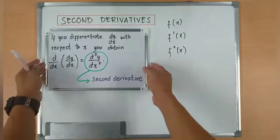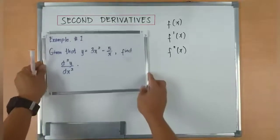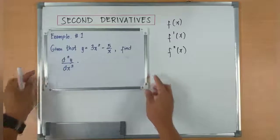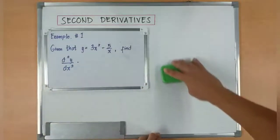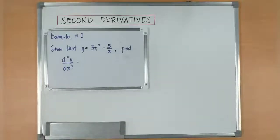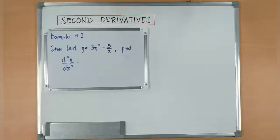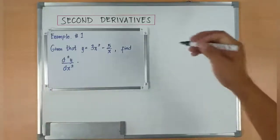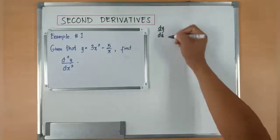Let's try to do some examples. Example number one. Given that y is equal to 3x squared minus 5 over x, find the d squared y over dx squared. You remember this? This represents the second derivative. So if you want to get that, you have to find first dy over dx.